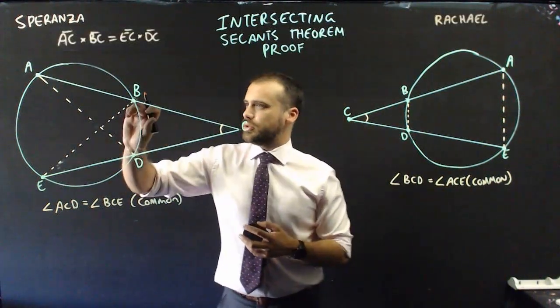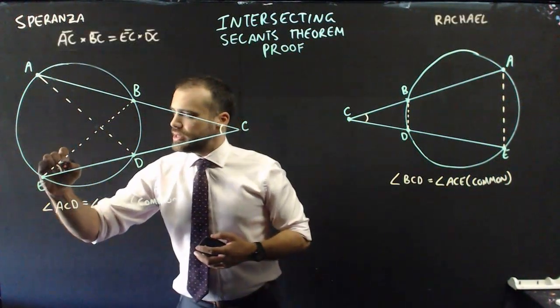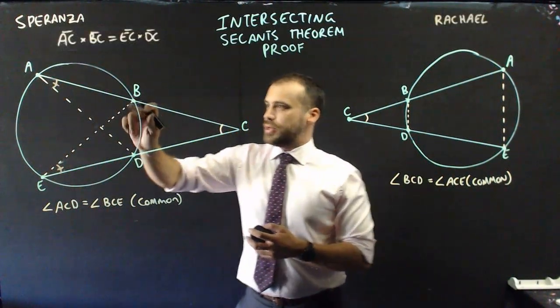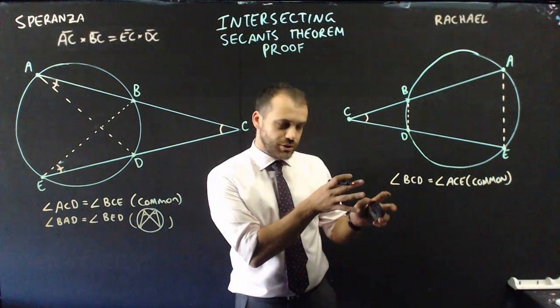Now, what do I do next? Well, I look at BAD and BED and see that these angles are the same because they're subtended from the same arc. So, how does Rachel respond?